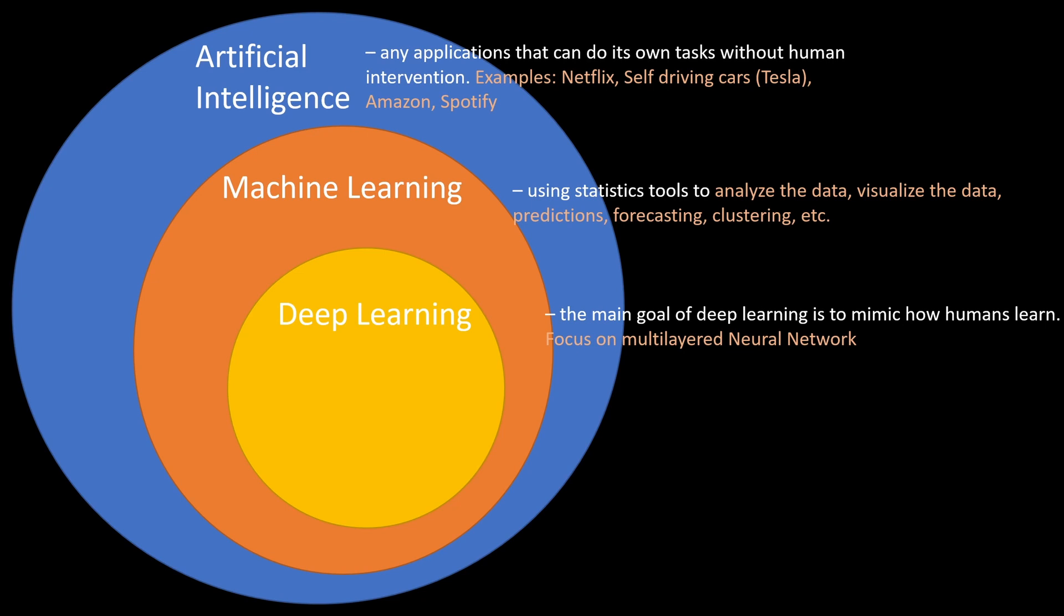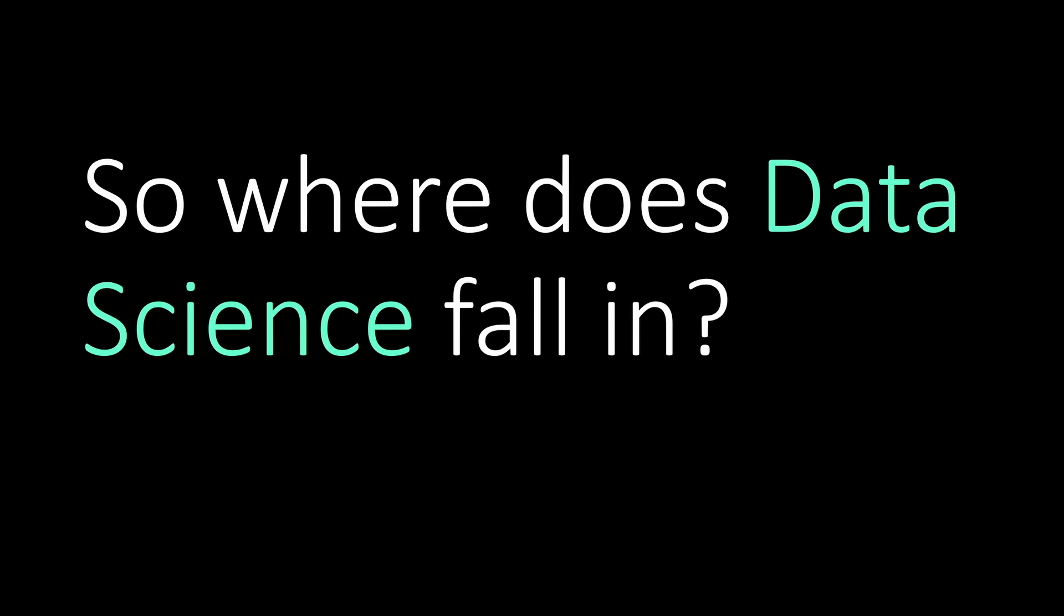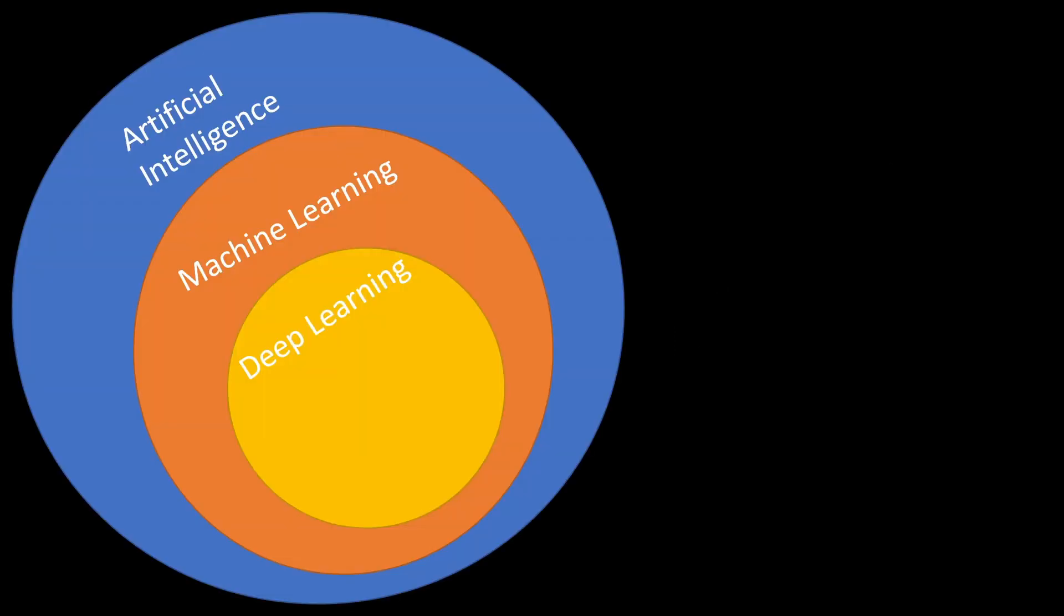So now you might be wondering, so where does data science fall in? Well, let's see. Let's go back to our big world with machine learning as a subsection of artificial intelligence and deep learning as a subsection of machine learning. And let's see where data science falls in.